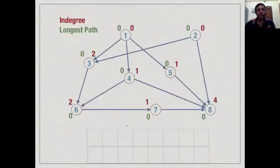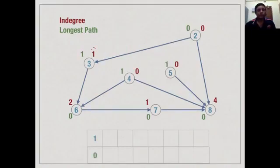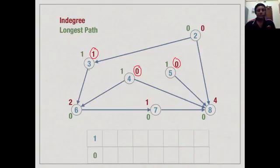Here is an example in which we compute the longest path as we compute the topological order. The red numbers against the vertices denote the in-degrees used for topological sort. The initial in-degrees are given by the initial edges in the graph. We initialize the longest path to every vertex as 0. When we enumerate vertex 1 in topological sort, in addition to updating in-degrees as before, we say that since vertex 1 was enumerated before 3, 4, and 5, the longest path to 3, 4, and 5 is at least 1 — that is, 0 plus 1.